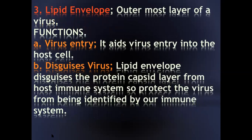The third component of the viral structure is the lipid envelope — the outermost layer — which is not always present in all families of viruses. It has two functions: first, it aids the entry of the virus into the host cell, just like the protein capsid; and second, it disguises the protein capsid layer from the host immune system, protecting the virus from being identified.